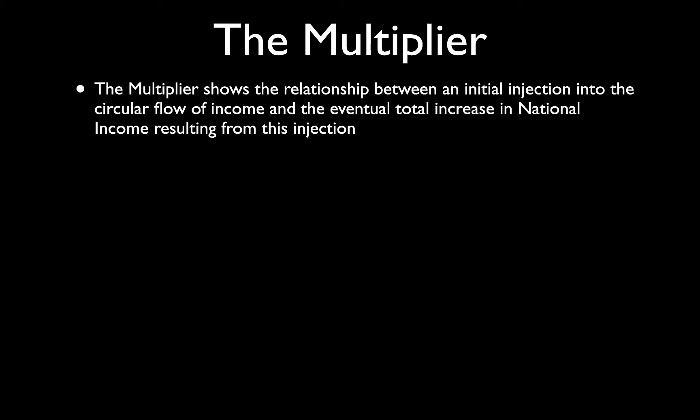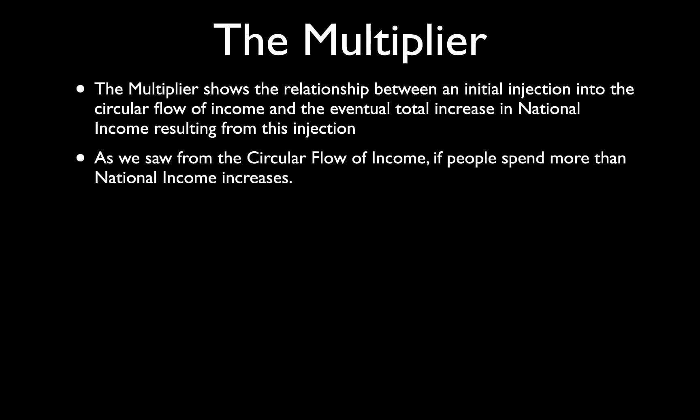So what's the definition of the multiplier? The multiplier shows the relationship between an initial injection — an initial bit of spending, an increase in total expenditure into the circular flow of income — and the eventual increase in national income and GDP resulting from that injection. If I spend money, national income rises, because national income is calculated by the expenditure approach.